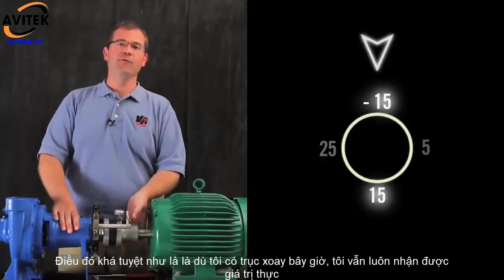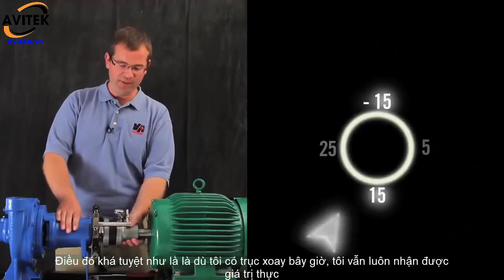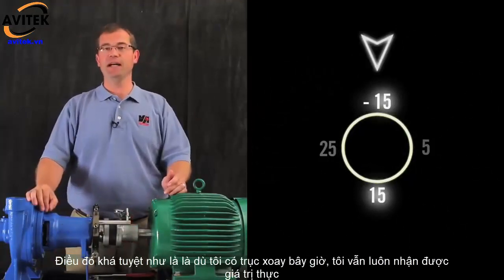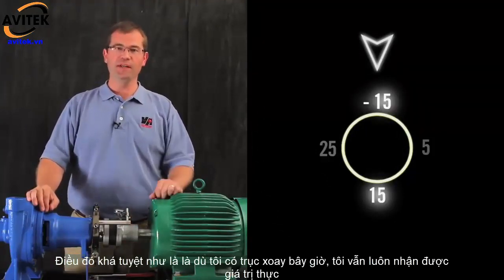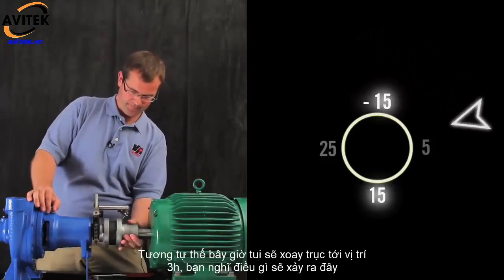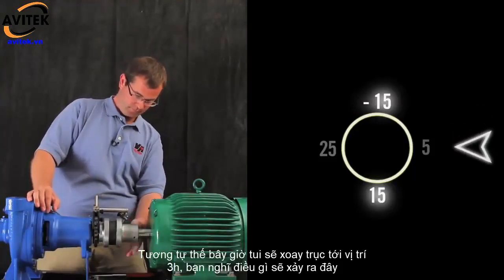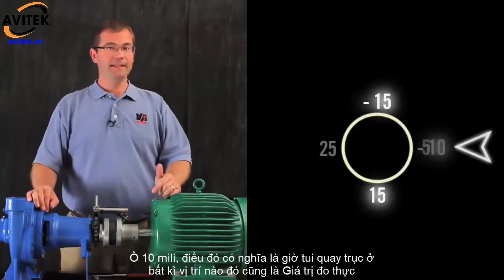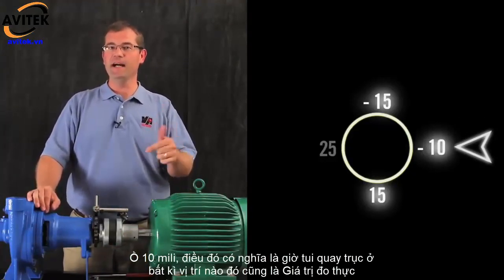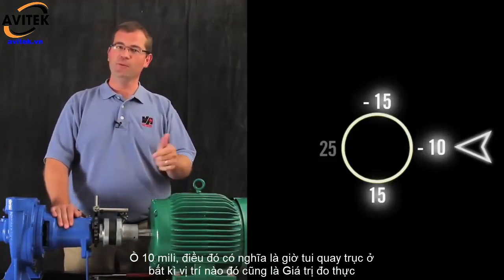The really cool thing is that regardless of where I have the shafts rotated now, I'm always reading True Position. So now, if I rotate the dial to 3 o'clock, what do you think the indicator will read? Well, let's see. 10 mils, which is half of the TIR value that we got from before.